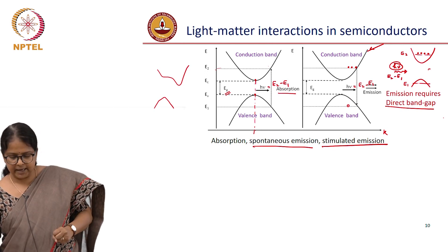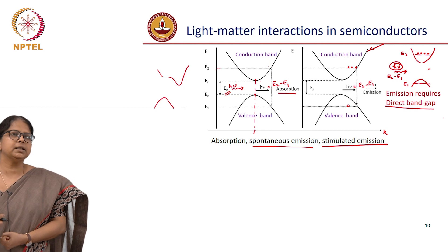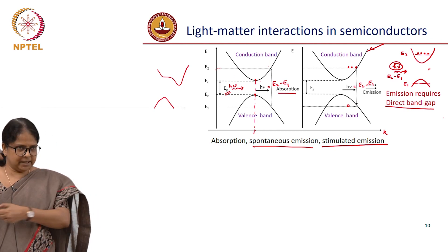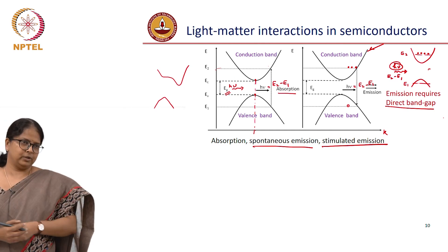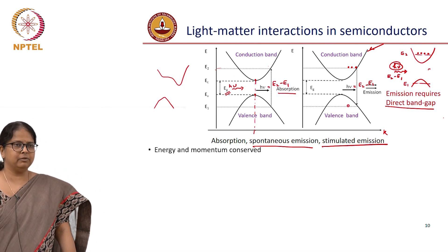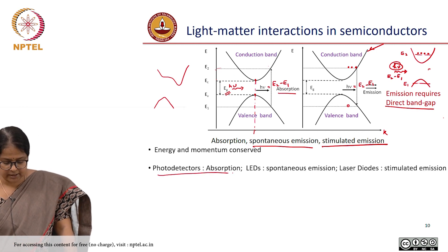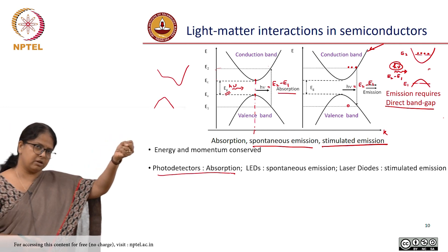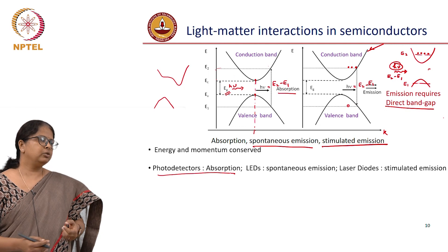All these processes can happen in the semiconductor: absorption, spontaneous emission, and stimulated emission. An absorption process takes in a photon and generates an electron-hole pair. A spontaneous emission process takes an injection current and generates photons. A stimulated process takes an injection current, creates excess carriers, takes in a photon and generates more photons. In all these processes you need to conserve energy and momentum — it is not just the y-axis, you have to worry about the x-axis also. Photo detectors work based on absorption — you get a photon, generate an electron-hole pair, and if you extract that electron into an electrical circuit, that measures the number of photons incident.